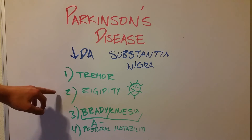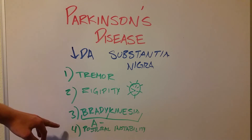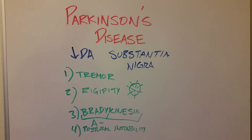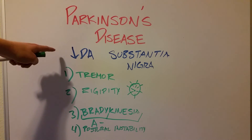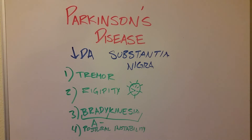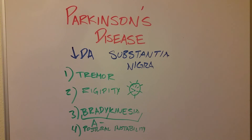To recap: pill-rolling tremor, cogwheel rigidity, bradykinesia, and postural instability — very high yield for tests. Parkinson's is caused by a decrease of dopamine-producing cells in the substantia nigra part of the midbrain. One treatment, at least in the beginning stages, is to give the person a dopamine agonist or a replacement source of dopamine — something that's kind of like dopamine — to reverse or prolong these symptoms as long as possible. A characteristic example is Michael J. Fox, who is affected by Parkinson's, so look him up on YouTube if you're curious for a characterization of the disease.